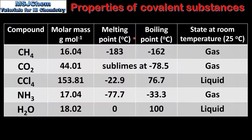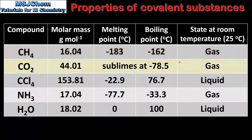If we focus on the melting points and boiling points we can see they tend to be quite low. For example, methane melts at negative 183 degrees C and boils at negative 162 degrees C. The reasons for these low melting and boiling points are the weak intermolecular forces that exist between the molecules. Methane, being a non-polar molecule, only has weak London dispersion forces between its molecules, resulting in a low boiling point, which means it's a gas at room temperature. The same is true for carbon dioxide, which is also a gas at room temperature — being a non-polar molecule it only has weak London dispersion forces.